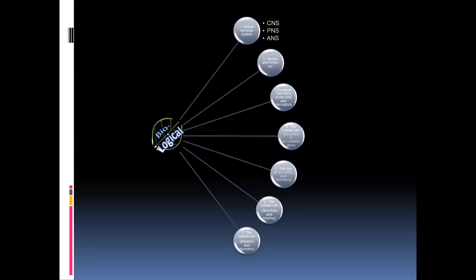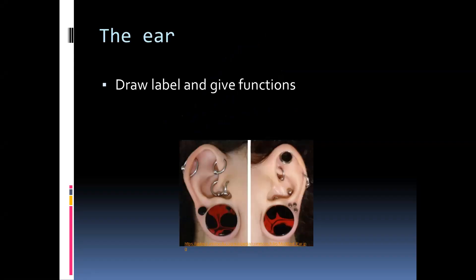In the fourth and fifth lessons you've seen how the eye works. Now you will hear a bit about the ear. This video looks at the structures and functions of the different parts of the ear as well as the process of hearing. It is recommended that you draw a diagram of a section through the ear, labeling all of the different parts and giving the functions.